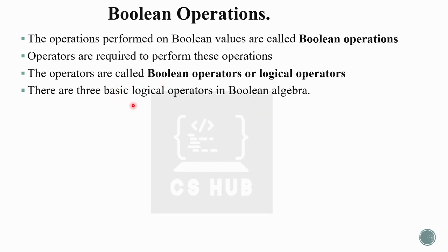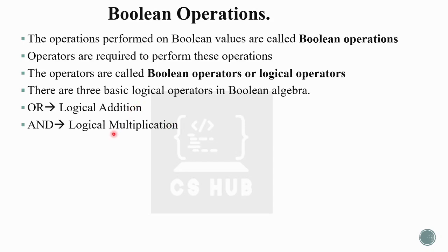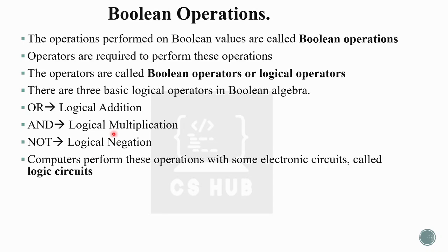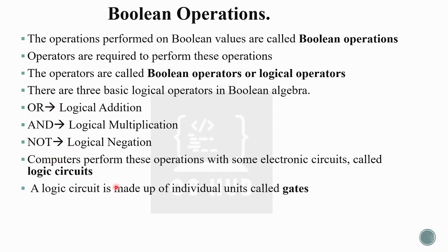There are three basic logical operators: OR, which is logical addition; AND, which is logical multiplication; and NOT, which is logical negation. With the help of electronic logic circuits, we implement these operations. Logic circuits are made up of individual units called gates.